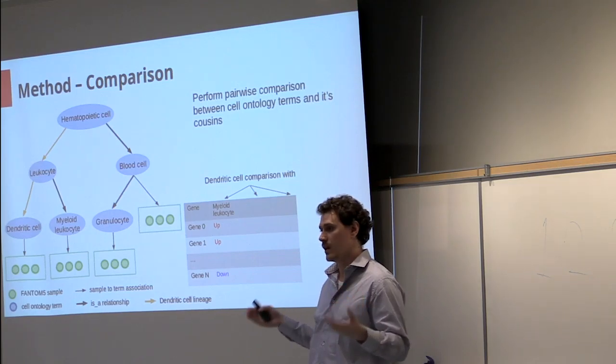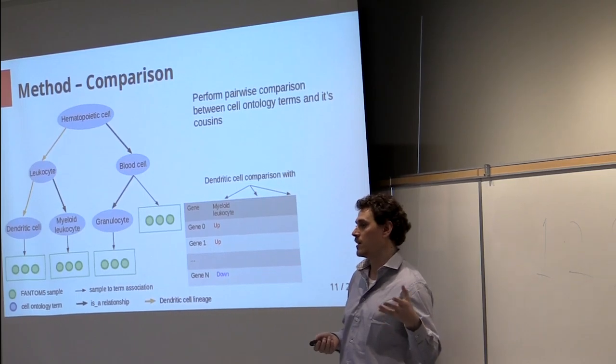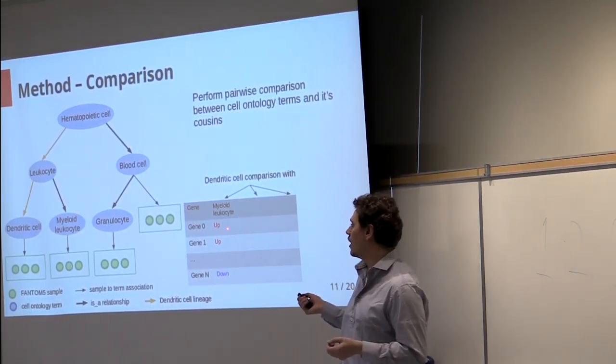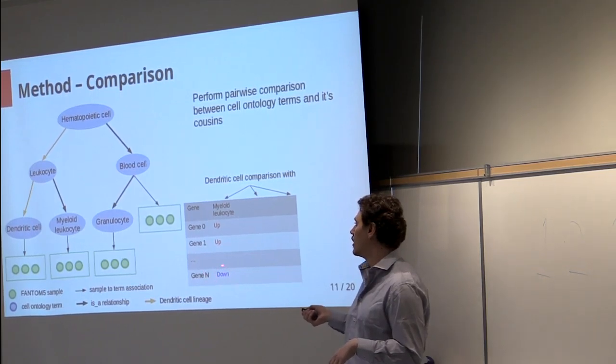And we look at the expression value of this gene. If it is higher in dendritic cells we assign the label up, if it's lower in dendritic cells we assign the label down.